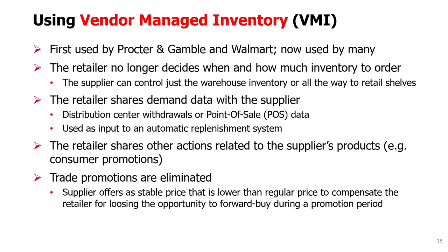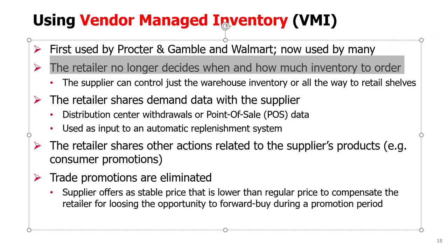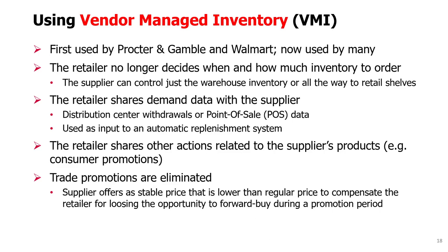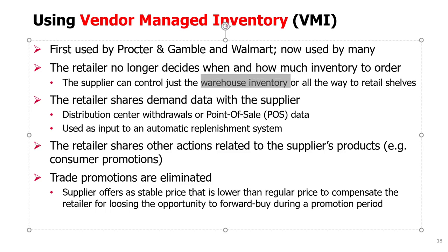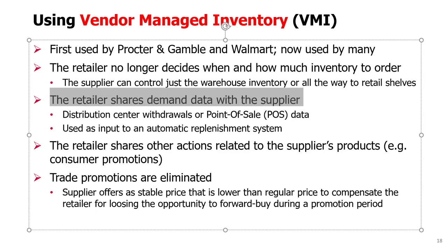Many strategies that reduce the bullwhip effect fall under what is called Vendor-Managed Inventory, or VMI. This approach was first used by Procter & Gamble in cooperation with Walmart and is now used by many companies. The idea is that the retailer no longer decides when and how much inventory to order — it is the supplier that is in control. Approaches differ: in some cases the supplier controls just warehouse inventory, while in others the supplier controls all the way to the retail shelves. For this to work, the retailer must share demand data with the supplier.